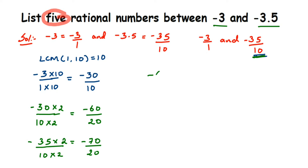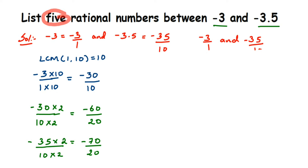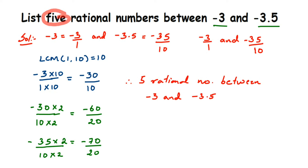Now we can see many numbers between minus 60 by 20 and minus 70 by 20 — like minus 61, minus 62, all the way to minus 69. We just pick any five. Therefore, five rational numbers between minus 3 and minus 3.5 are: minus 61 by 20, minus 62 by 20, and so on — you can pick any numbers in between.